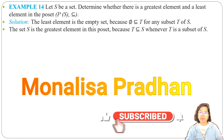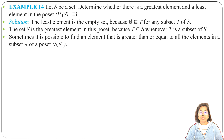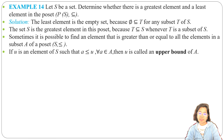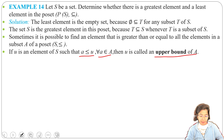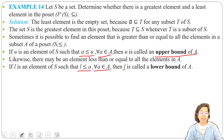In the previous lecture I discussed minimal element, maximal element, greatest element, and least element. Today I will discuss upper bound and lower bound. If U is an element of S such that A is less than or equals to U for all A belonging to A, then U is called an upper bound of A. Similarly, if L is an element of S such that L is less than or equals to A for all A belonging to A, then L is called a lower bound of A. There can be multiple upper bounds and lower bounds.